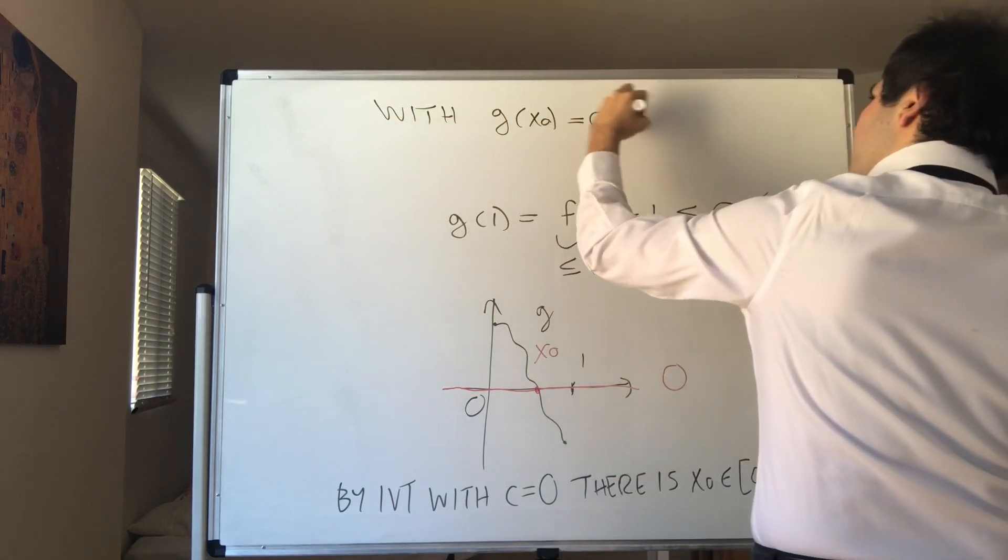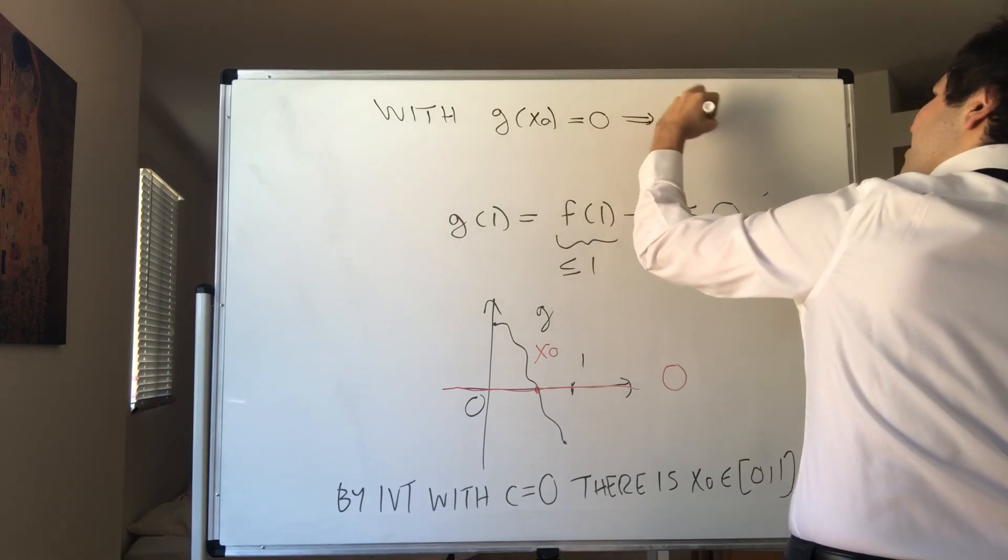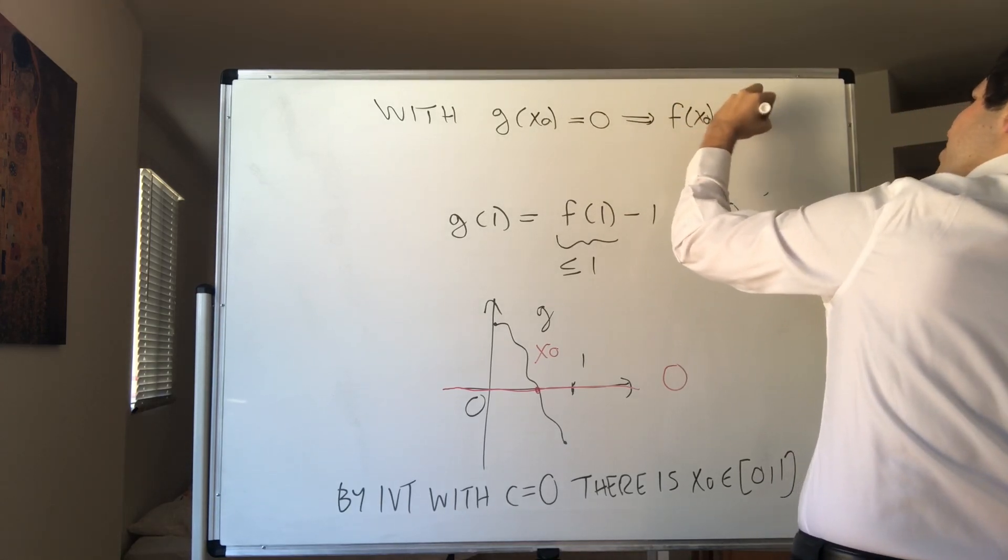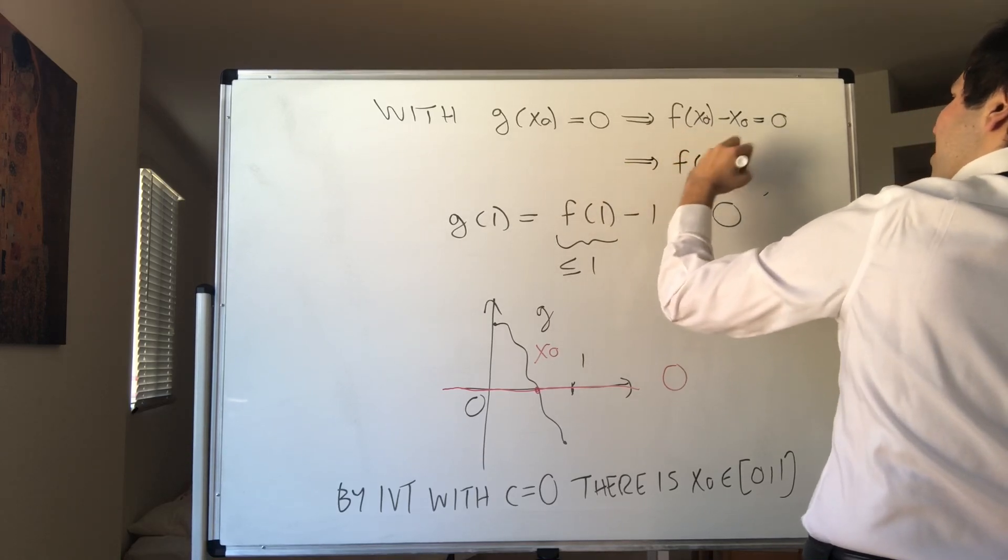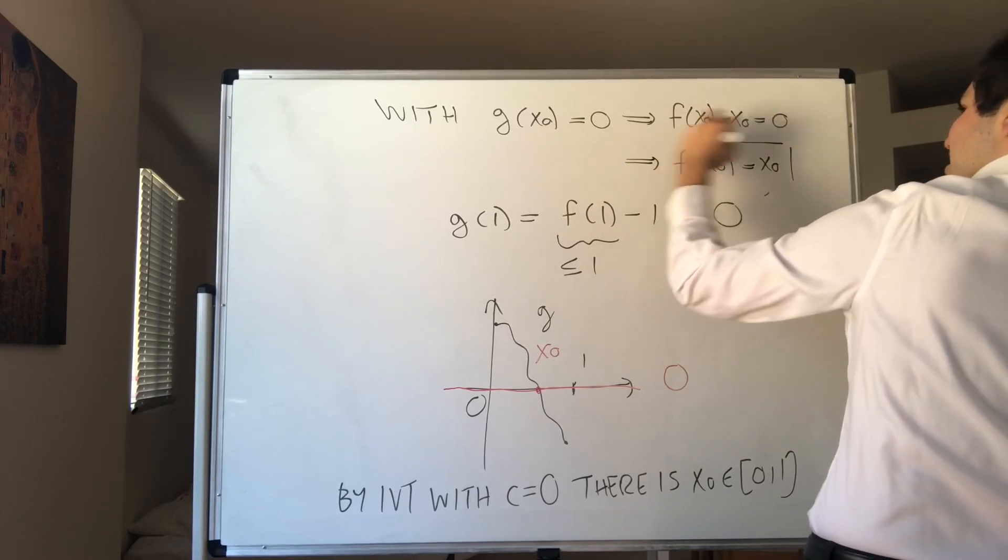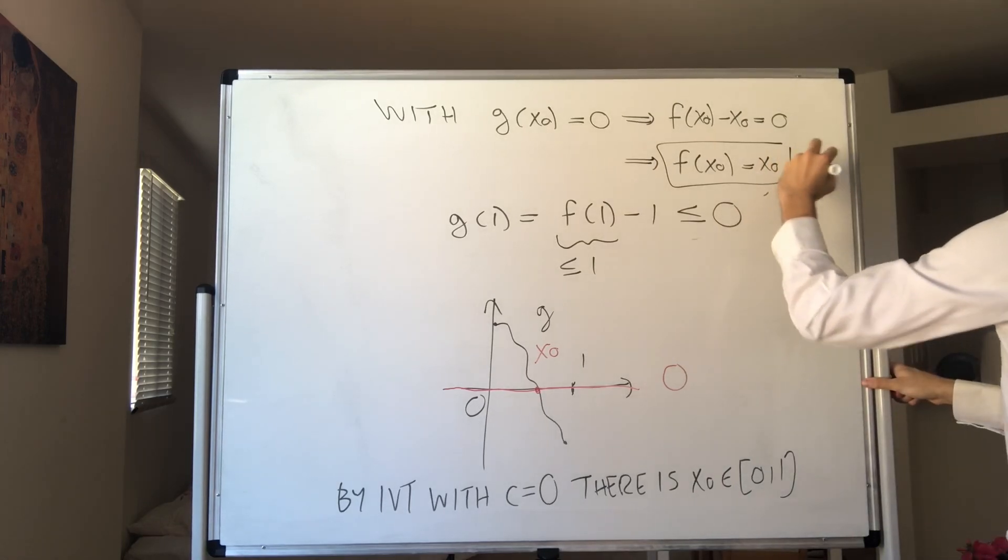But then that just implies f(x₀) minus x₀ equals 0 by definition of g, and therefore, f(x₀) equals x₀. And that's it.